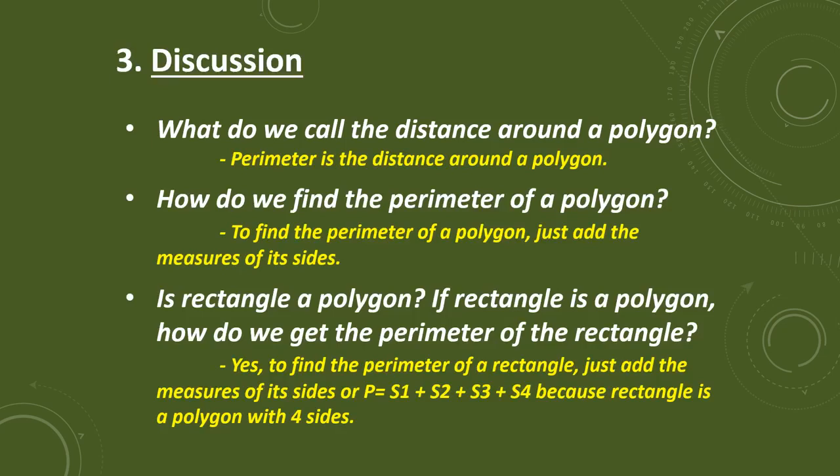And now let's come to the discussion. The teacher will ask questions first: What do we call the distance around a polygon? How do we find the perimeter of a polygon? Is rectangle a polygon? If rectangle is a polygon, how do we get the perimeter of rectangle? The expected answers are: perimeter is the distance around a polygon. To find the perimeter of a polygon, just add the measures of its sides, which can be written as P equals S1 plus S2 plus S3 plus S4, because rectangle is a polygon with 4 sides.